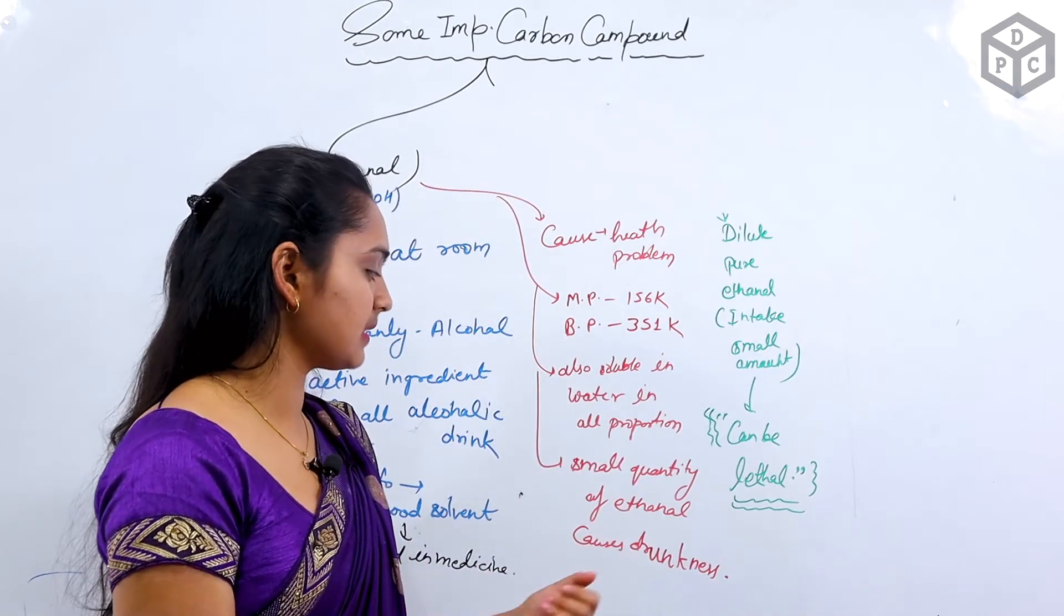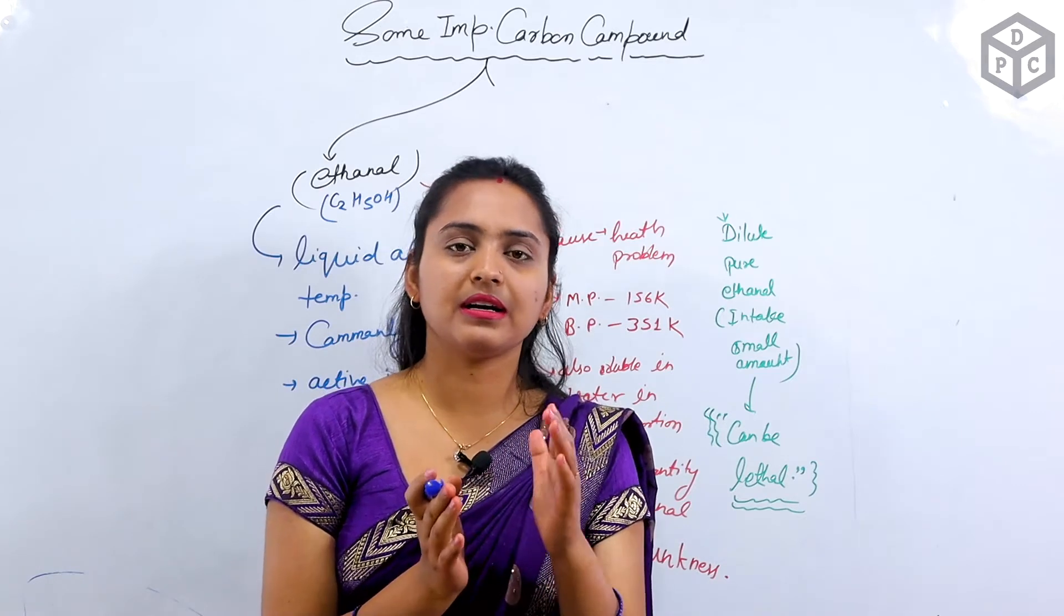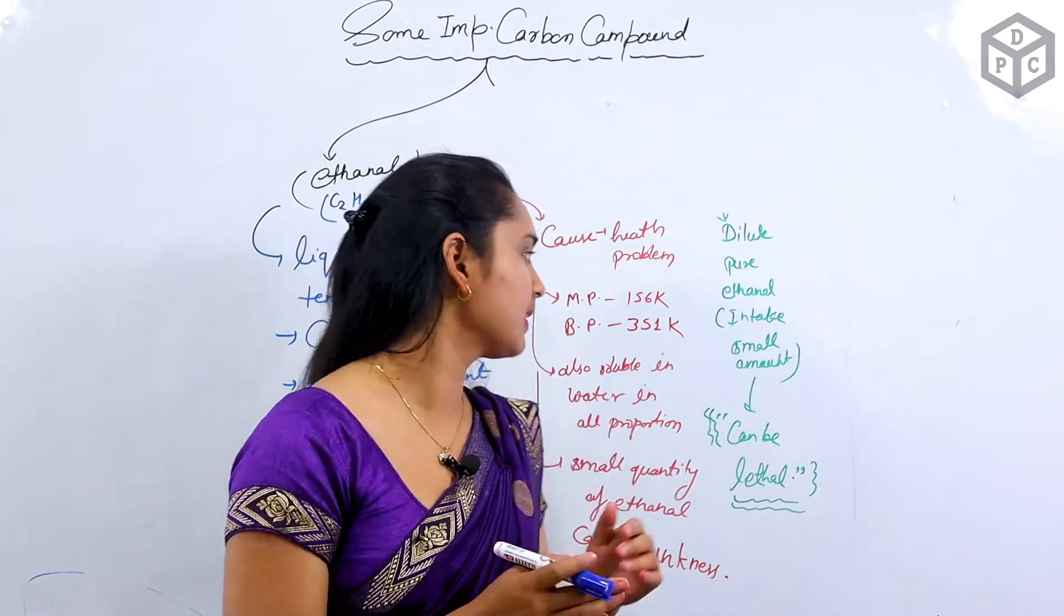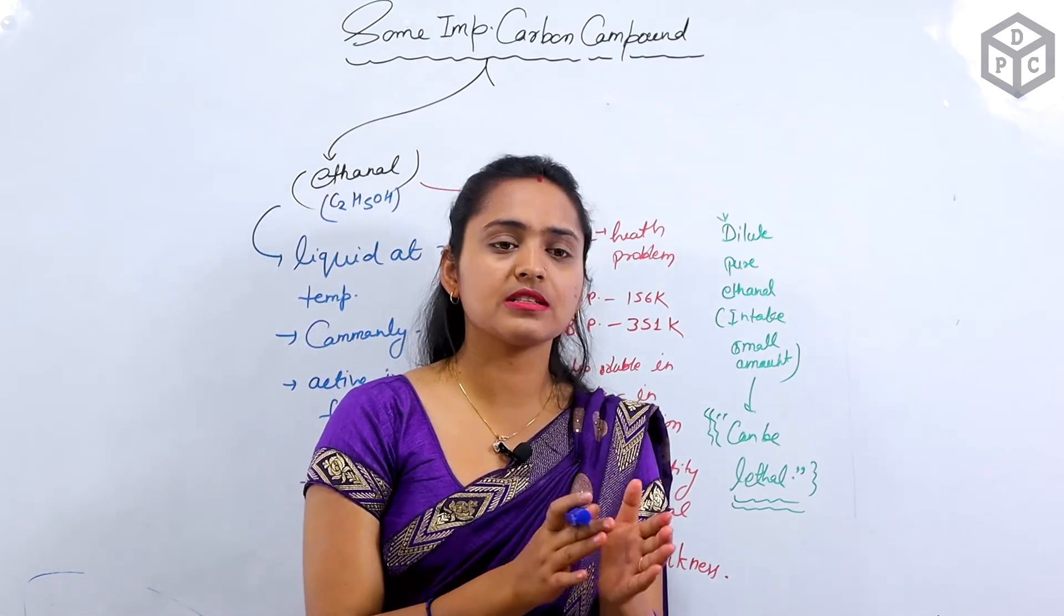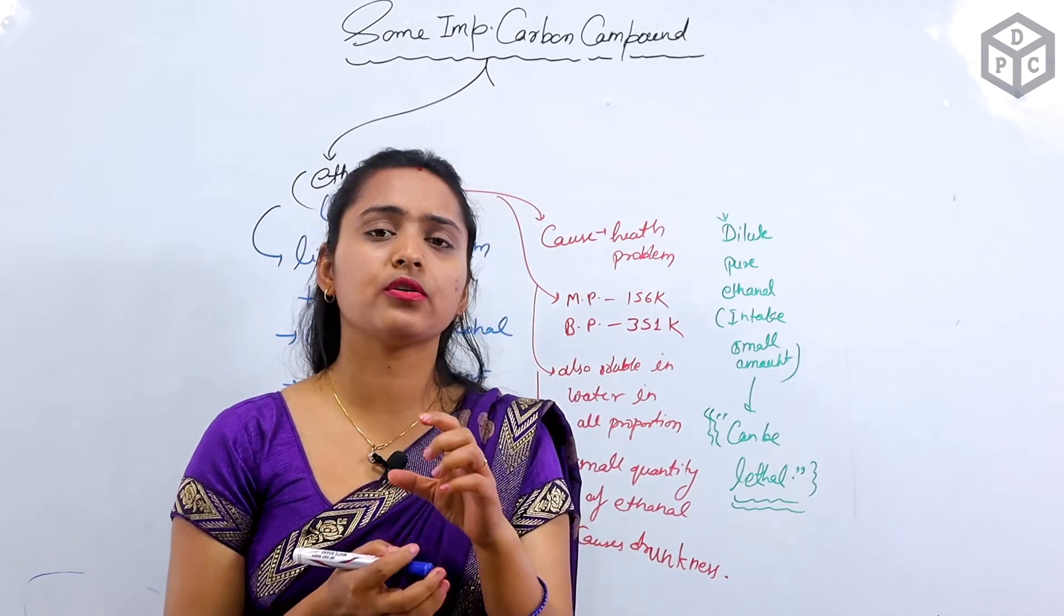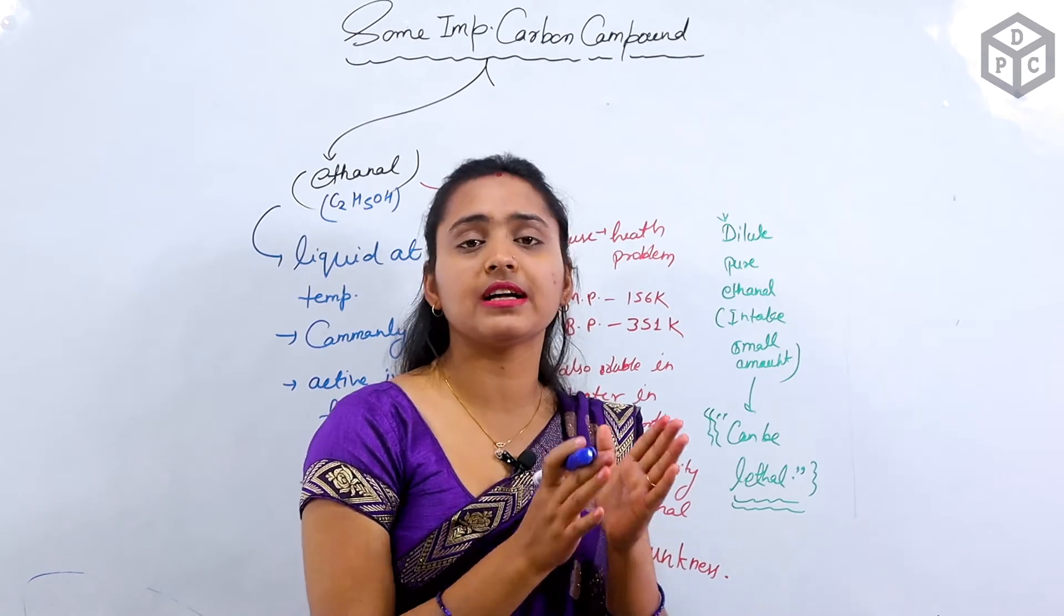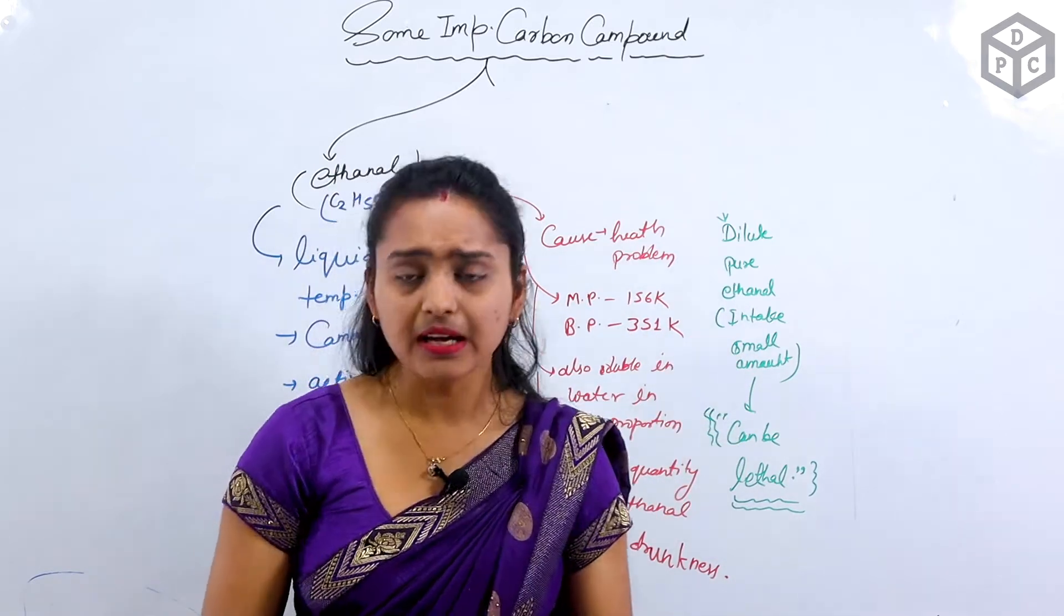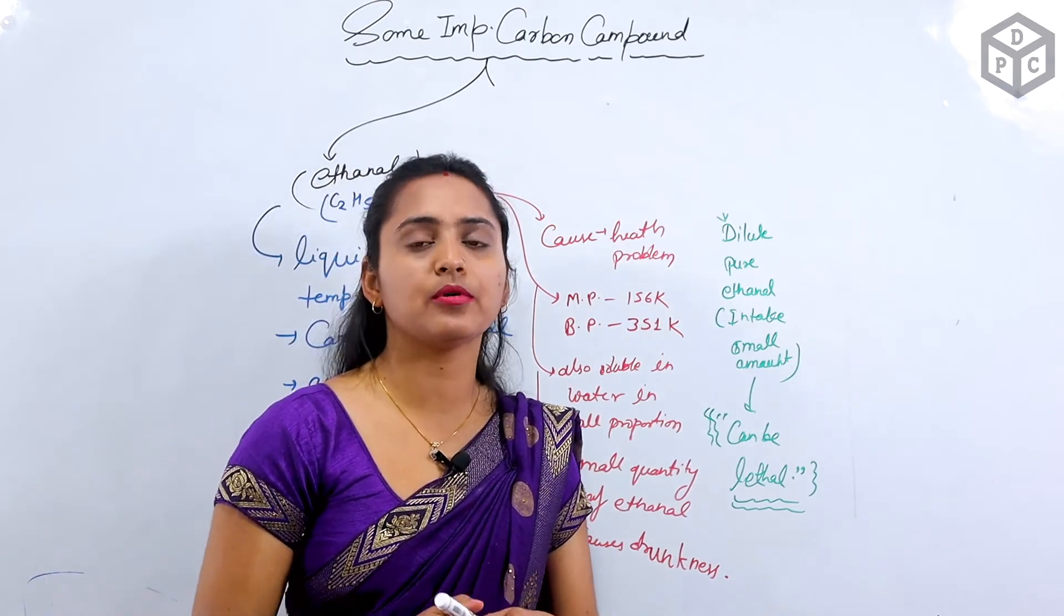Small quantity of ethanol causes drunkenness. If you use a little bit of ethanol, then it will cause drunkenness. Large quantity of ethanol is very harmful and can even cause death. So, this is ethanol and alcohol. Now, these are all physical properties. It is normal. Now, I will tell you the chemical properties.